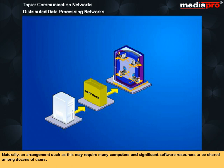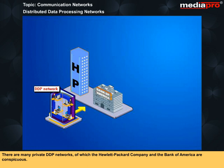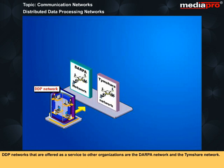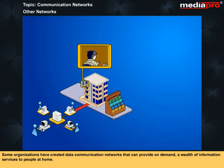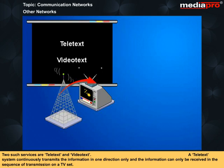A DDP arrangement may require many computers and significant software resources to be shared among dozens of users. Like a time-sharing system, a DDP network may be used solely for a single organization or may be available as a service for use by many organizations. There are many private DDP networks, of which the Hewlett Packard Company and the Bank of America are conspicuous examples. DDP networks offered as a service to other organizations include the DARPA network and the time-share network. Some organizations have created data communication networks that can provide on-demand a wealth of information services to people at home.